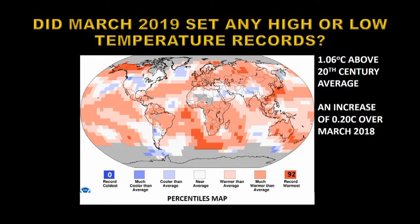The question we're asking is: did March set any high or low temperature records? To do that we must look at the percentiles map. They divide all the measurements into five equal categories. If something's within 10% of average temperature they show white. Something 20% cooler is light blue, and 40% cooler is a slightly darker blue. On the other side, light red shows 20% above average and slightly darker red shows 40% above average. Record cold is shown by a very deep blue, and record warm by a very deep red. As you can see from this plot, there are no record cold temperatures set, yet there are 92 pixels that show record high temperatures.